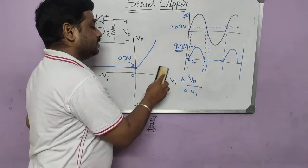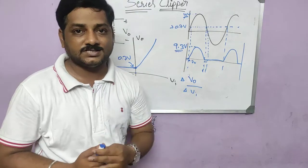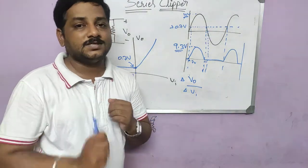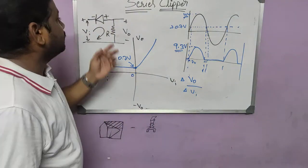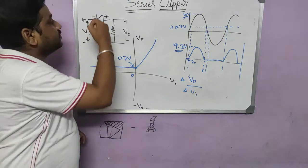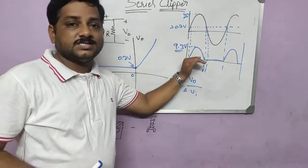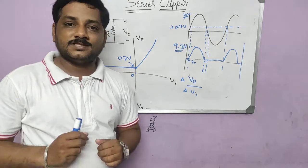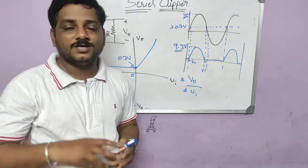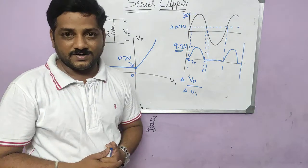I hope you understood the concept of the series clipper — how to analyze it and how to understand it. In the next video, let me tell you one more concept: what happens if we include a voltage source in series with the diode. There will be a change in the output, and we shall discuss that in the next video. If this video is clear, please like it, comment on it, and share it among your friends. Thank you.